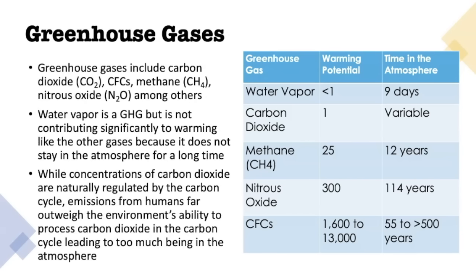Let's dig a little further into what greenhouse gases actually are. If you look at the chart on the right, there's a list of common greenhouse gases, their warming potential, and their time in the atmosphere. These greenhouse gases include things like water vapor, carbon dioxide, methane, nitrous oxide (N2O), and CFCs. Their warming potential refers to how much heat they're actually able to trap in the atmosphere. Remember, greenhouse gases help trap that infrared heat radiation from the sun to warm the planet — the stronger their warming potential, the more heat they trap.